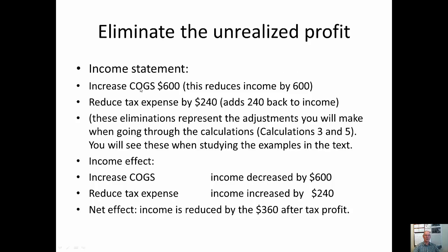Here's how we do it. Remember that cost of goods sold is basically an expense account. We add the $600 unrealized profit to cost of goods sold. This may seem strange at first — we're not just saying sales minus $600; instead we're increasing an expense account. That still reduces income by $600. We also reduce tax expense by $240. In this PowerPoint presentation and video we're just going to do this on the PowerPoint.